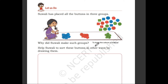Help Suali to sort these buttons in another way by drawing them. How can you divide these buttons in another group? If you observe the buttons, the shape of the buttons is different — one is a circle and one is a square.